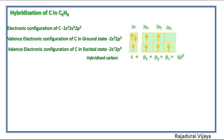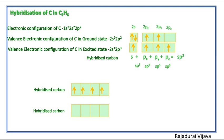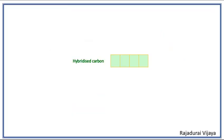The one 2s orbital and three 2p orbitals hybridize together, forming sp3 hybridized orbitals. It contains four unpaired electrons. In the ethane molecule there are two carbon atoms, so it has two sp3 hybridized orbitals, each containing four electrons.